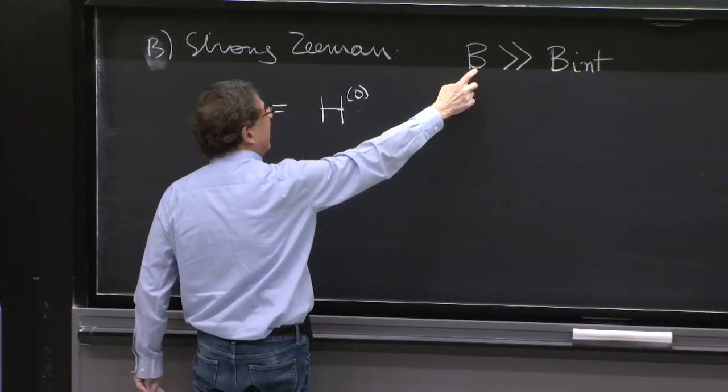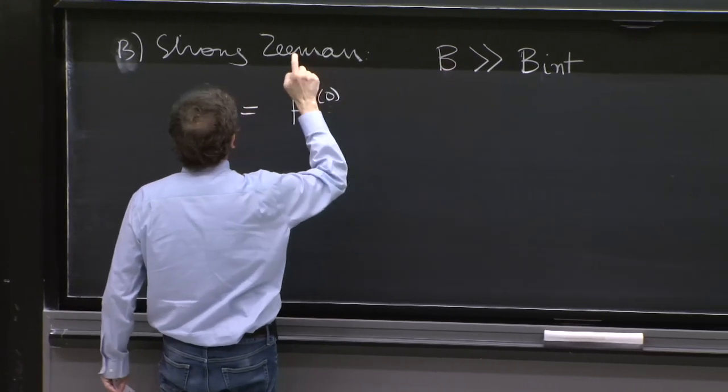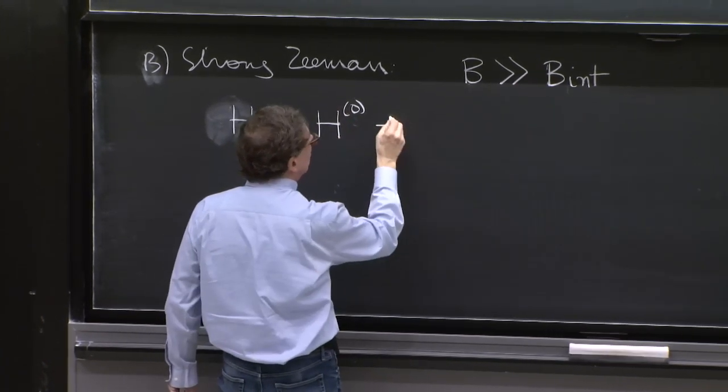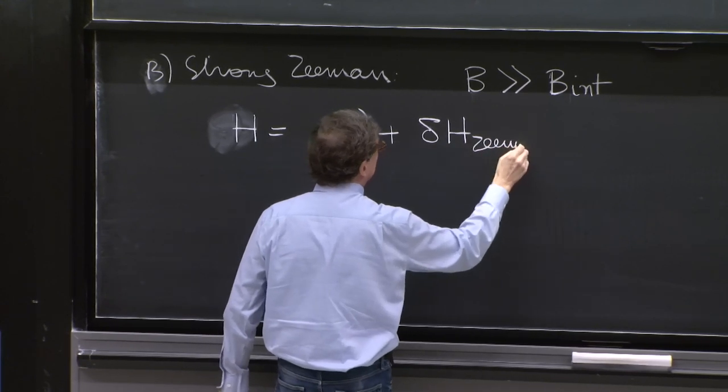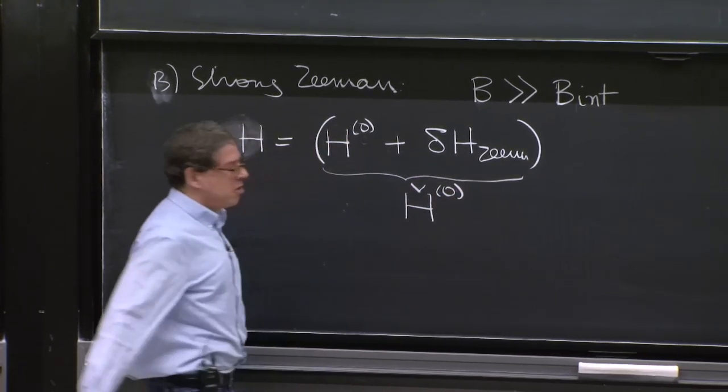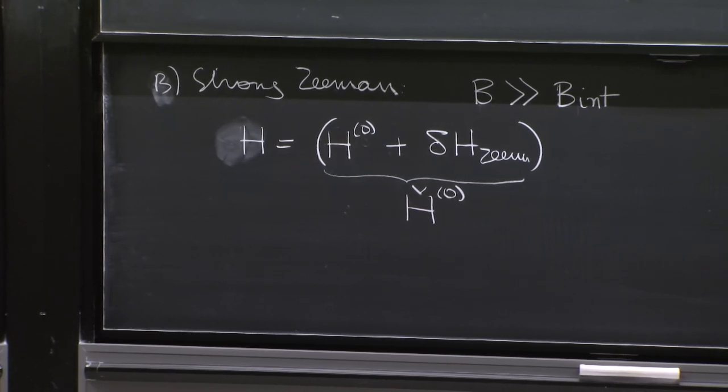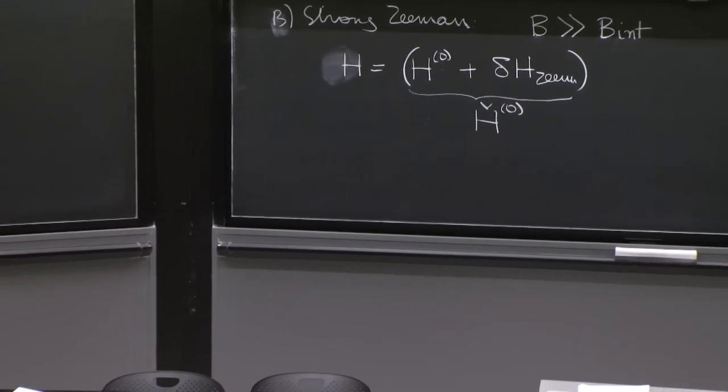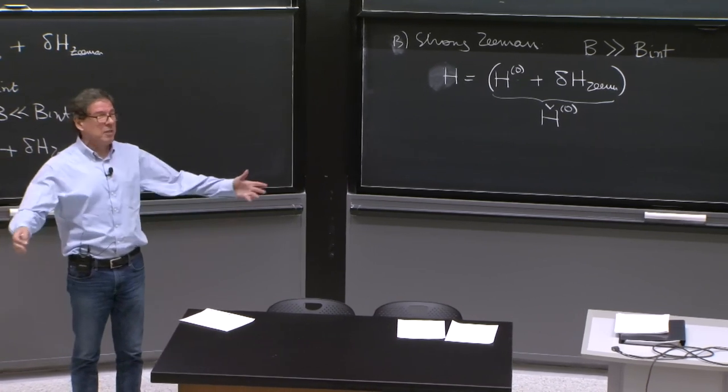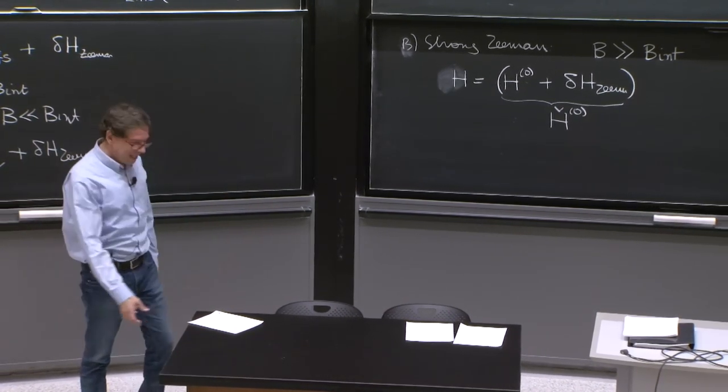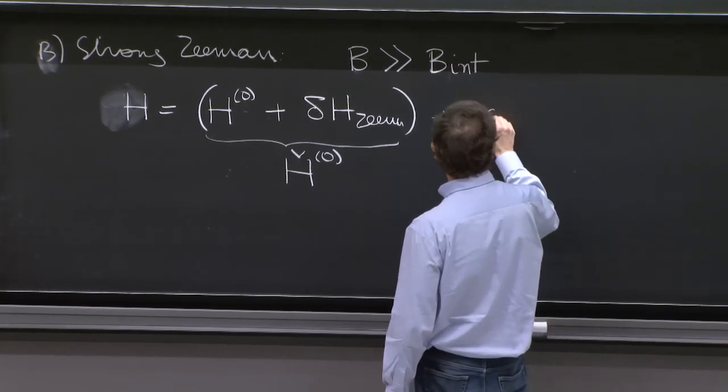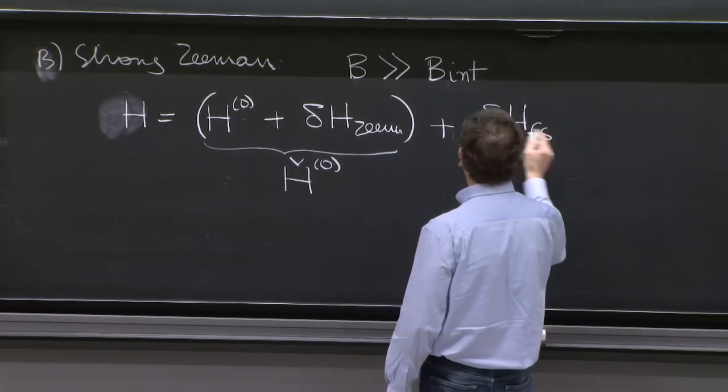The strong Zeeman effect means this Zeeman Hamiltonian is a lot more important than the spin orbit coupling. So we'll add delta H Zeeman here. And we hope this will be our known Hamiltonian, because the Zeeman stuff is much stronger now than fine structure. So this should be our known Hamiltonian. You should complain. OK, no, this is not known. I haven't done Zeeman, but we'll look at it. And once we have our known Hamiltonian here, spin orbit has to be rethought. Fine structure has to be rethought as a perturbation.